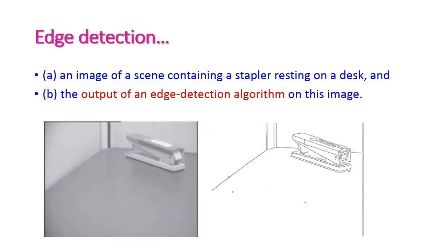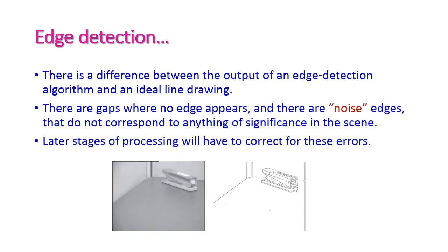In the edge detection algorithm, a first image is given as input to the edge detection algorithm and we get an output image where only the edges are extracted. There is a difference between the output of the edge detection algorithm and a normal line drawing algorithm — some gaps may appear in the output, and some noise edges may also appear, which may be rectified in later stages of image processing.